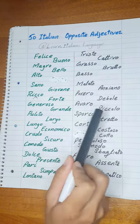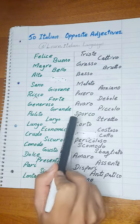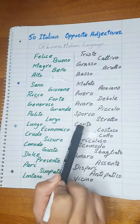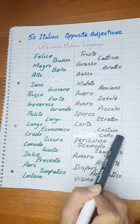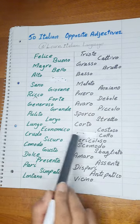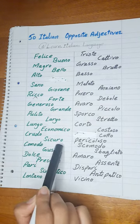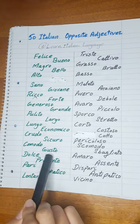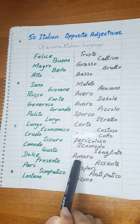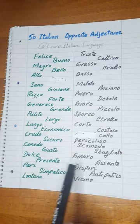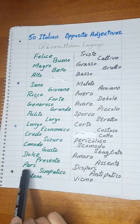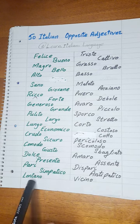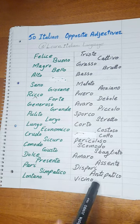Grande — Piccolo. Pulito — Sporco. Largo — Stretto. Lungo — Corto. Economico — Costoso. Crudo — Cotto. Sicuro — Pericoloso. Comodo — Scomodo. Giusto — Sbagliato. Dolce — Amaro. Presente — Assente. Pari — Dispari. Simpatico — Antipatico. Lontano — Vicino.